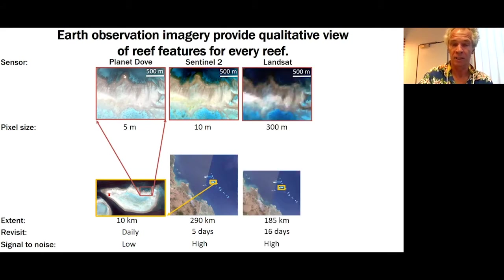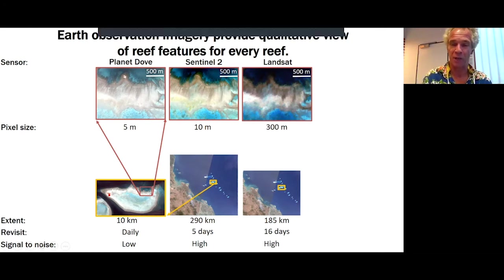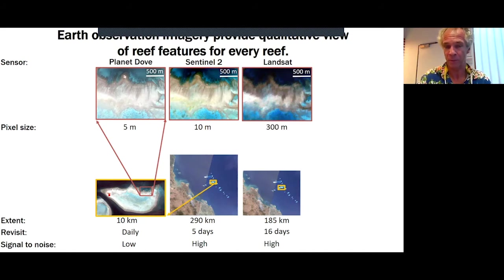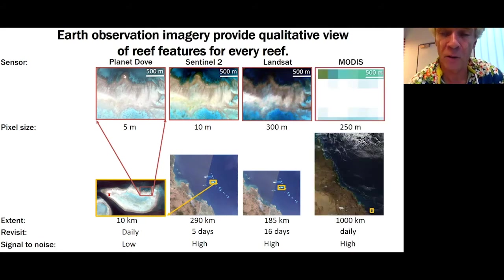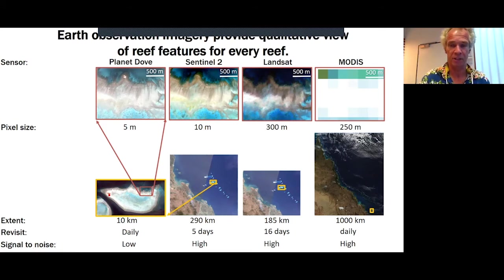There are two Sentinel satellites. Landsat is very special because it has been going since 1988, so you can use it to look at time series of change. However, the pixel size is 30 meters, meaning you can recognize boats and buildings but not cars or small objects. MODIS satellites cover the whole Great Barrier Reef in one go but have pixel sizes of 250 meters. Comparing those four sensor types, you can see the very different levels of detail they provide, and we use them for different parts of projects.